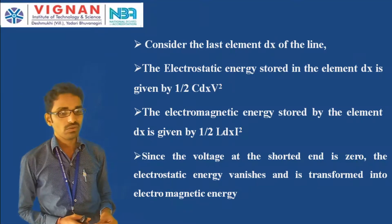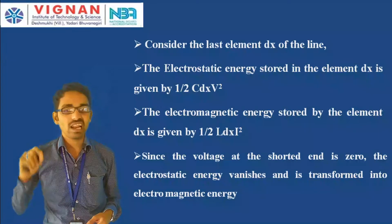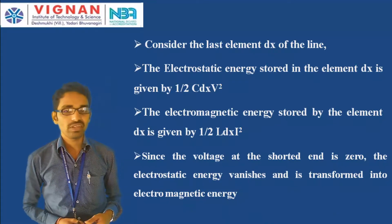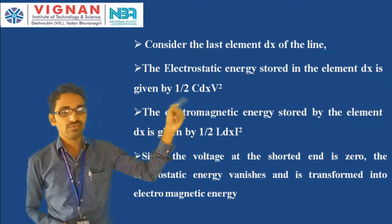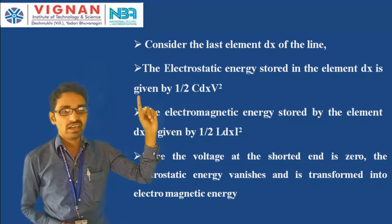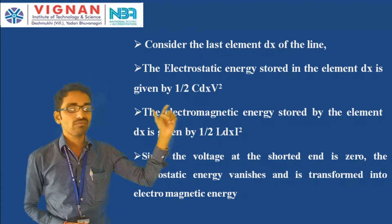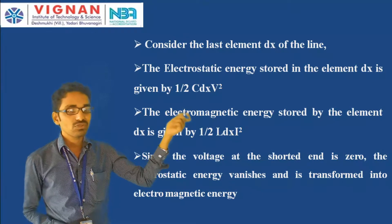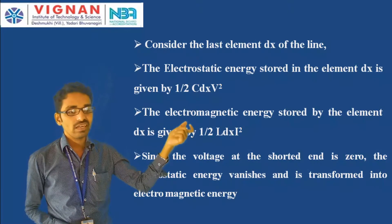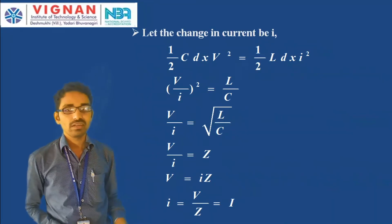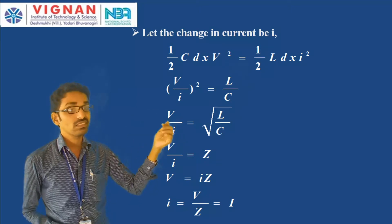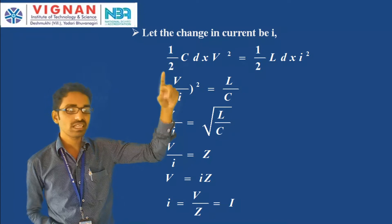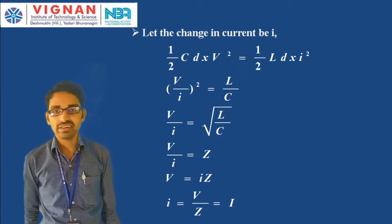Since the voltage at the shorted end is zero, at the place of short circuit the current is large and voltage is zero. The electrostatic energy (1/2)·C·dx·V² vanishes — meaning it neither creates nor destroys but transforms. Whatever energy was stored in the capacitor as electrostatic energy is transferred to the inductor as electromagnetic energy. So if the change in current is i, then (1/2)·C·dx·V² = (1/2)·L·dx·i².